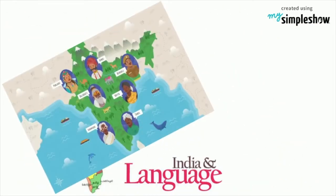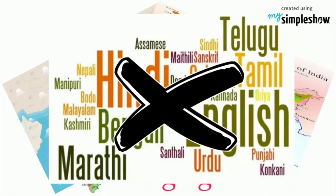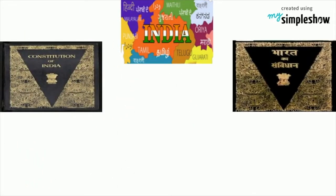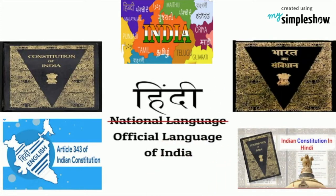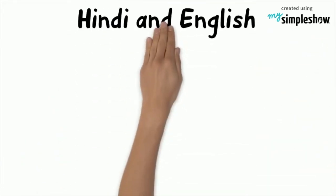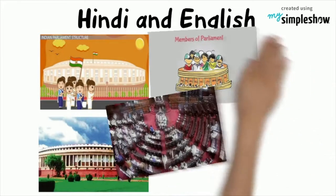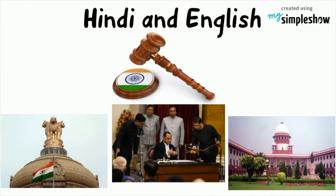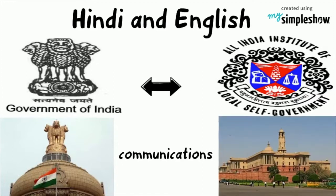There are various official languages in India at the state level. However, there is no national language in India. The Constitution of India designates the official languages as Hindi and English, used for official purposes such as parliamentary proceedings, the judiciary system, and communications between the central government and state governments.